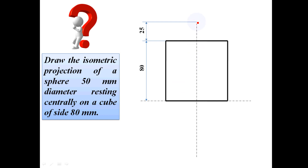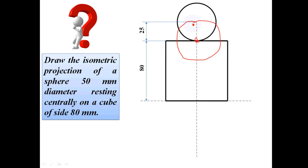This is the center point. The center of 25mm radius is marked here. This is the circle representing the sphere in the front view. The good idea is to identify the center of the surface — this is the circle for the sphere.